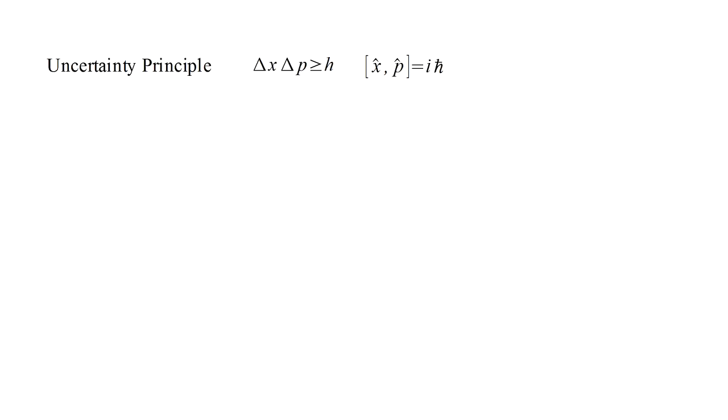Now, when we write delta x and delta p to represent the uncertainty in position and momentum, we are being a bit imprecise about how we are defining uncertainty. A rigorous approach is to use the concept of a statistical standard deviation. And in this case, we can obtain the precise statement that the product of the standard deviations of position and momentum are rigorously greater than or equal to h-bar over two, which is h over four pi.